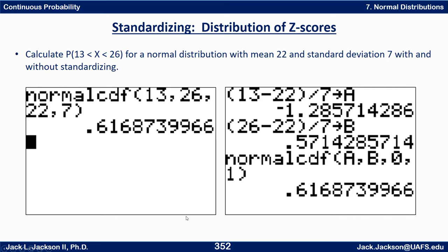As far as just doing a problem like this, it's not really helpful to standardize, but there are situations down the road where we would still like to. In the old days you wouldn't want to make up a table for every possible combination of mean and standard deviation — that's impossible. But you can make up one standard normal table and look up values from there. With calculator technology, the direct approach is probably the better way to do it.